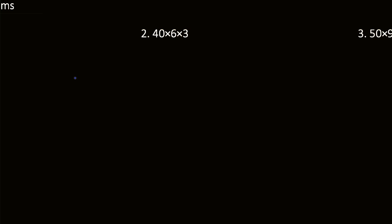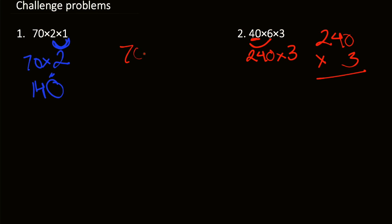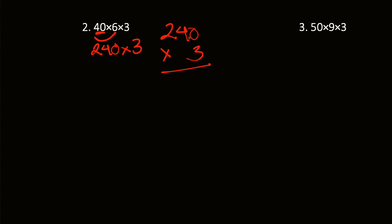Next challenge problem: 40 times 6 times 3. I'm going to do 40 times 6 first. 40 times 6 is 240 — it's a multiple of 10, so that's easier. Then we do 240 times 3: 0 times 3 is 0, 4 times 3 is 12 so write 2 and carry 1, then 2 times 3 is 6, plus 1 is 7. So we get 720. If we did 40 times 3 instead, we'd get 120 times 6, which is also 720.